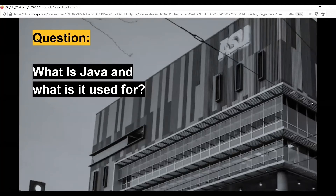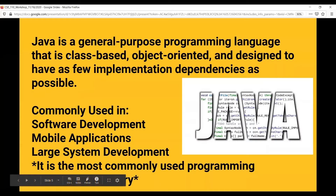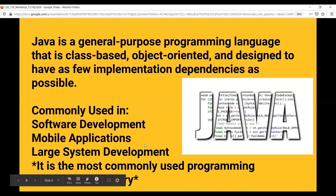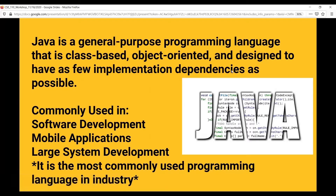Before we start going over the basics of Java, we have to first figure out what Java is and what it is used for. The definition of Java is that it is a general purpose programming language that is class-based, object-oriented, and designed to have as few implementation dependencies as possible. Java is mostly used nowadays for software development, mobile applications, and large system development, and it's actually the most commonly used programming language currently — by quite a large margin.